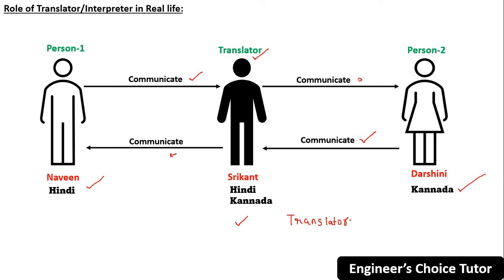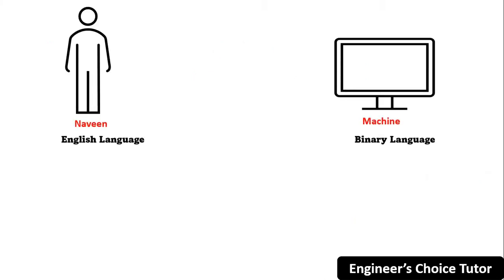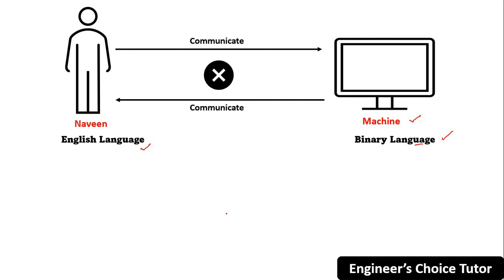Now let's come to the technical explanation. Let's see how a programmer can interact with a system or computer or machine. Naveen knows English and wants to communicate with the machine — our computer. The machine only knows binary language, and Naveen only knows English. So in this case, direct communication is not possible again, and we have to go for the translation concept.